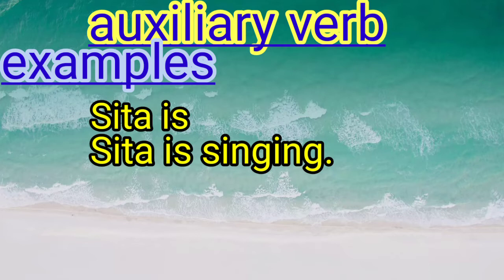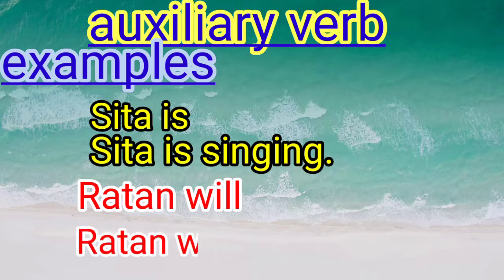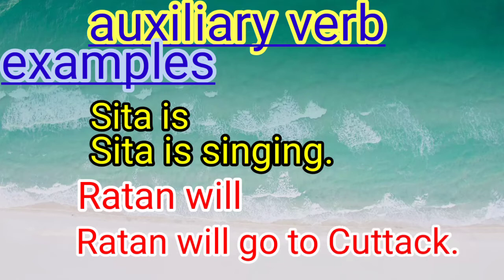Look at the second example: 'Ratan will' — what is it saying about Ratan? Now look at the complete sentence: Ratan will go to Cuttack. Here 'go' is the main verb and 'will' is the helping verb. Now you all understand main verb and auxiliary verb.